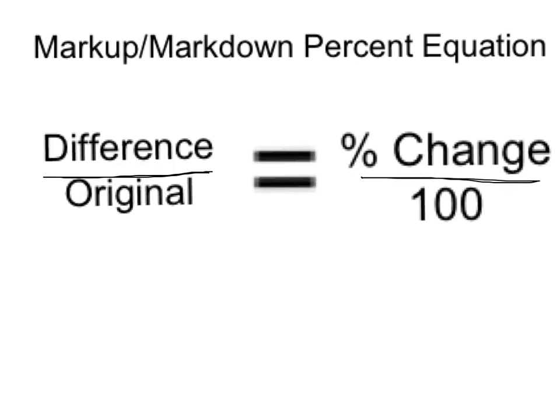We always use the absolute value of the difference. If the amount is increasing, we make sure our answer says it is increasing, and if it's decreasing, we say it's decreasing. We're always going to use the positive or absolute value for the difference. Please make sure you have the percent change equation in your notes.